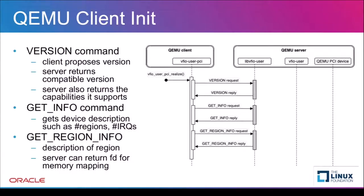The VFIO user protocol specification defines a series of messages that are exchanged between the client and the server, encapsulated into VFIO groups. When the client sends a command, most of the time it expects the server to reply with a specific message. In many cases, the message is similar to the data structures used in the IOCTL implementation of the VFIO IOCTLs. The VFIO user client initialization starts with a version message exchange with the server. This serves the purpose of identifying the protocol version supported and allows for backward compatibility using major and minor versions. The JSON string is used to request the capabilities that the server supports.